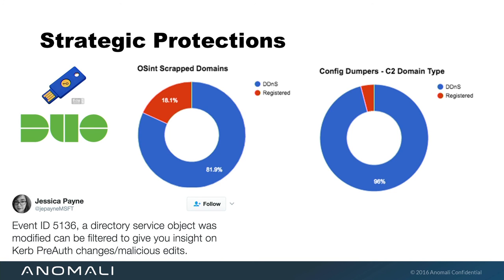There are strategic protections such as two-factor authentication if you're dealing with a lot of credential exposures. It's always nice to put some real numbers on things. A lot of folks talk about blocking dynamic DNS, and it seems like a pretty obvious thing to do. But from the data we've been pulling in from OSINT scraping, 82% of the domains we pull in are dynamic DNS. From the config dumping of all of the malware, 96% of the domains found in that config-dumped malware are dynamic DNS domains. Hopefully you can take those statistics to further bolster the case for blocking dynamic DNS in your organizations.